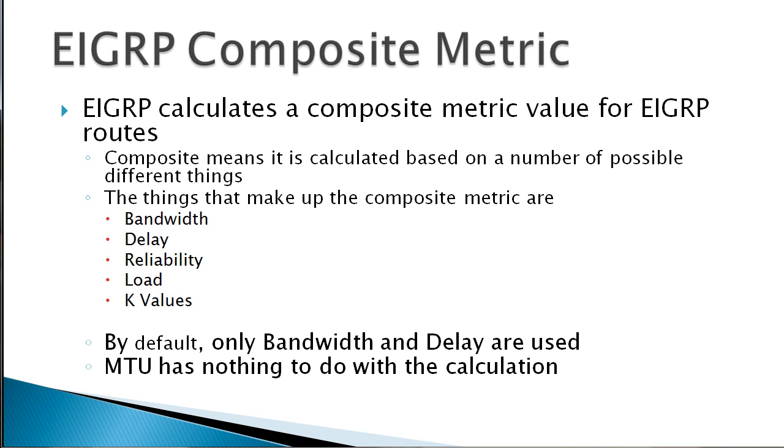Now what goes into that composite metric? Well, there's a list right here. Not all these things go into the metric calculation by default, but we do have the possibility or the capability to use all these things. We have bandwidth, delay, reliability, load, and k values.